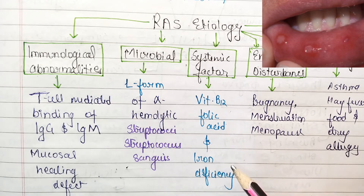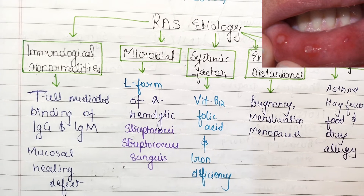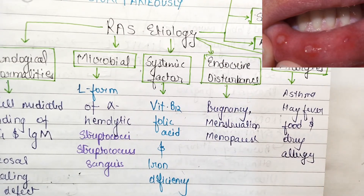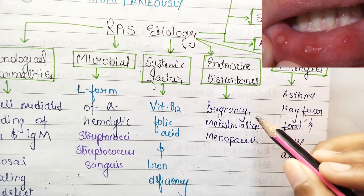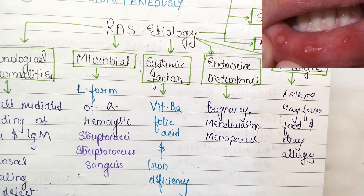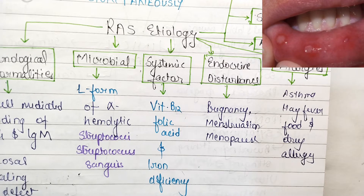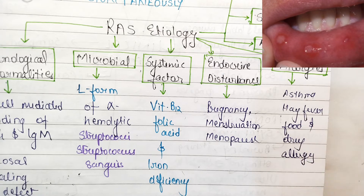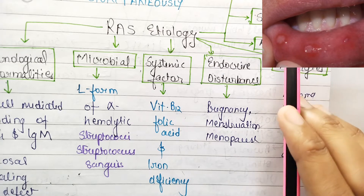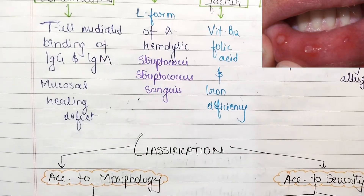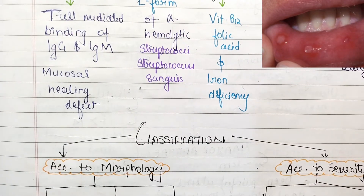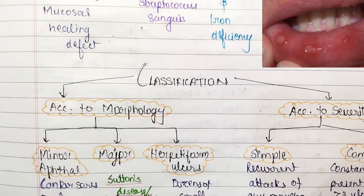Third are systemic factors — if a patient has a deficiency of vitamin B12, folic acid, or iron, they may develop recurrent aphthous ulcers. Fourth, endocrine disturbances — mainly females can be affected, for example in pregnancy, menstruation, and menopause. Fifth, allergies — for example asthma, hay fever, food, and drug allergy. Sixth, genetic predisposition. Seventh, stress. Eighth, anemia.